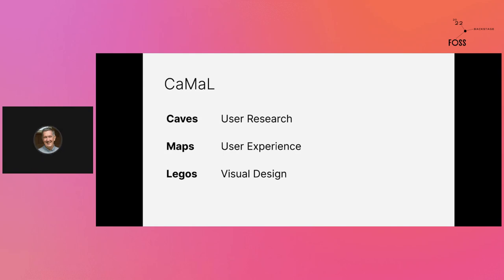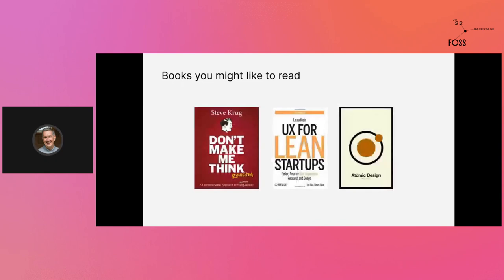Here's the summary of my CAMEL model: Caves are about user research, Maps are about user experience design, and Legos are about visual design. User research is exploring these dark places and helping you see them. Maps articulate the journey so you can talk about who the user is and what the pain points are. Legos is about how you construct your user interface in a consistent way. If there are books you want to read, I recommend three that cover each aspect: how to manage the project, how to think about research, and how to build design systems.